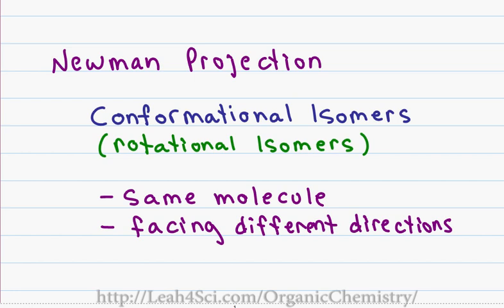A conformational isomer, also called a rotational isomer, is when you have the same molecule but it's facing a different direction in space.